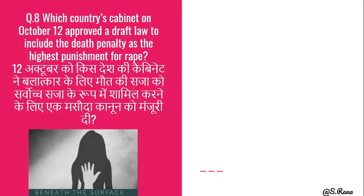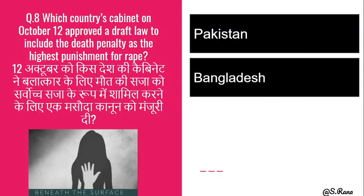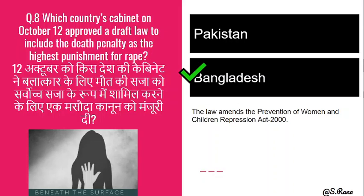Next question: Which country's cabinet on October 12 approved a draft law to include the death penalty as the highest punishment for rape? The answer is Bangladesh. It was amended in the Prevention of Women and Children's Repression Act 2000 of Bangladesh.